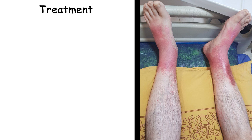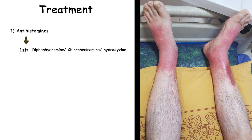To manage these reactions, different classes of medication are used, each targeting various symptoms and underlying processes. The first and most commonly used medication for allergic reactions are antihistamines. They work by blocking the action of histamine, a chemical released by the immune system during an allergic reaction. There are two major types: first generation, such as diphenhydramine, chlorpheniramine, and hydroxyzine; and second generation, such as cetirizine, loratadine, and fexofenadine. Second generation antihistamines are less likely to cause drowsiness and are far better for long-term use.